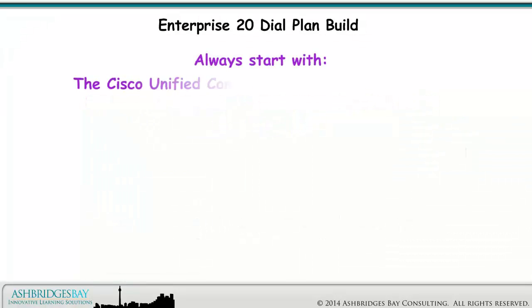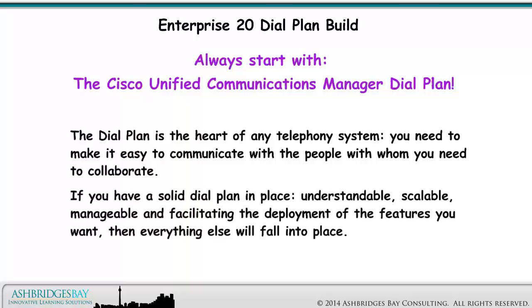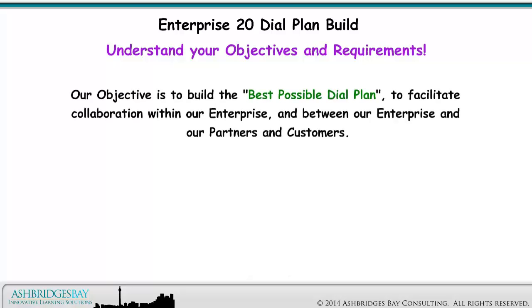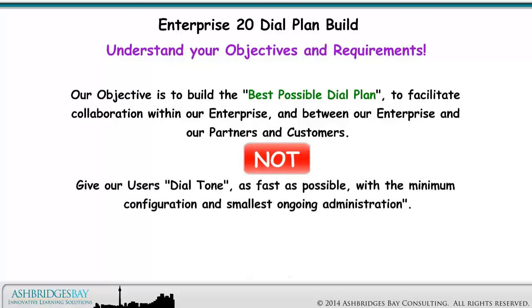Always start with the Cisco Unified Communications Manager Dial Plan. The dial plan is the heart of any telephony system. You need to make it easy to communicate with the people with whom you need to collaborate. If you have a solid dial plan in place — understandable, scalable, manageable, and facilitating the deployment of the features you want — then everything else will fall into place. Get your dial plan right. Our objective is to build the best possible dial plan to facilitate collaboration within our enterprise and between our enterprise and our partners and customers.